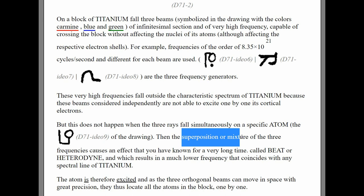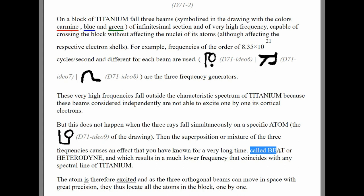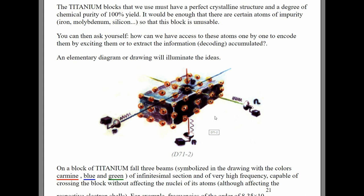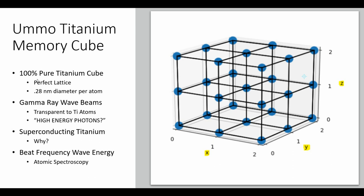But this memory technology is enabled by the superposition of these three waves. When they come together, they utilize something we know as beat frequencies. The beat frequency is what causes a much slower or lower frequency to occur. It is this lower frequency of these beat waves that allows them to interact with the titanium atom and set its electron medium. There's a lot of physics going on here, but it's not that difficult to understand.